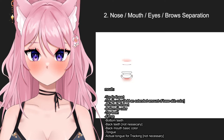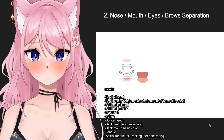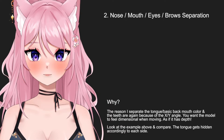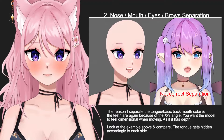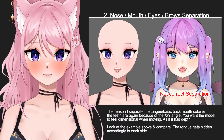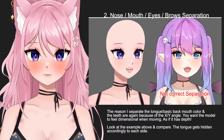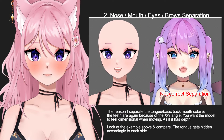The teeth are all white in this model with no liner, which is why I'm making them more visible with a black outline. Then fangs, separated into left and right which is optional, bottom teeth, back teeth — not necessary but they give the model a better feeling of depth — basic color of the back mouth, tongue, and an extra tongue layer for tracking. The reason for this specific separation on the tongue, back mouth color, and teeth is again because of the XY angle: you want the model to feel dimensional when moving left and right, as if it has depth.